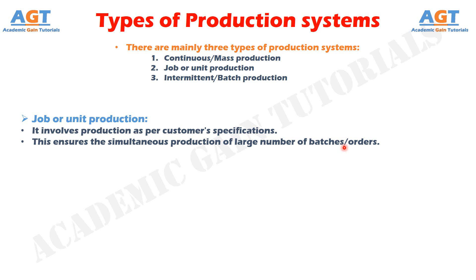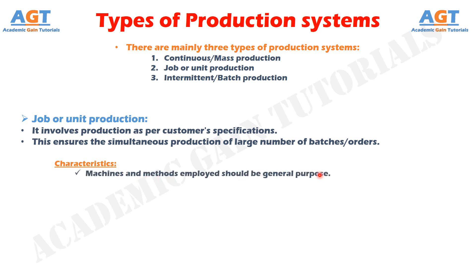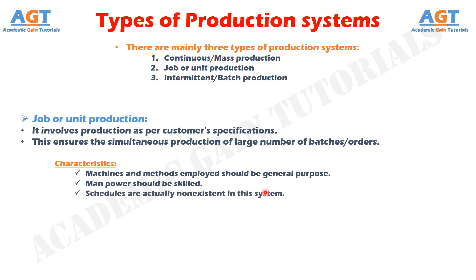In this system, products are made to satisfy a specific order. However, that order may be produced only once, or at irregular time intervals as and when a new order arrives, or at regular time intervals to satisfy a continuous demand. What are the characteristics of job or unit production? Machines and methods employed should be general purpose as product changes are quite frequent. Manpower should be skilled enough to deal with changing work conditions. Schedules are actually non-existent in this system as no definite data is available on the product. In-process inventory will usually be high as accurate plans and schedules do not exist.